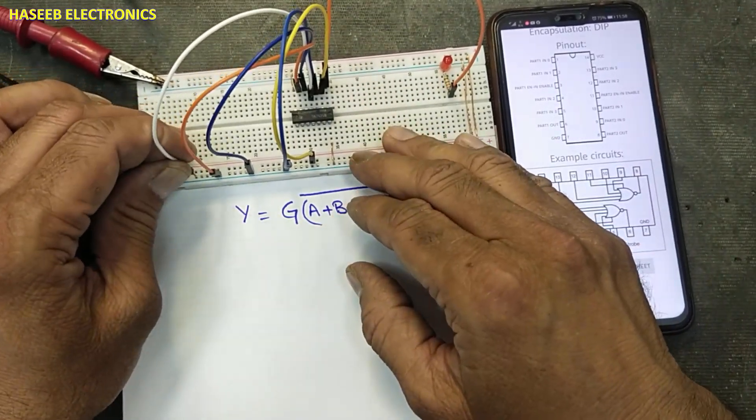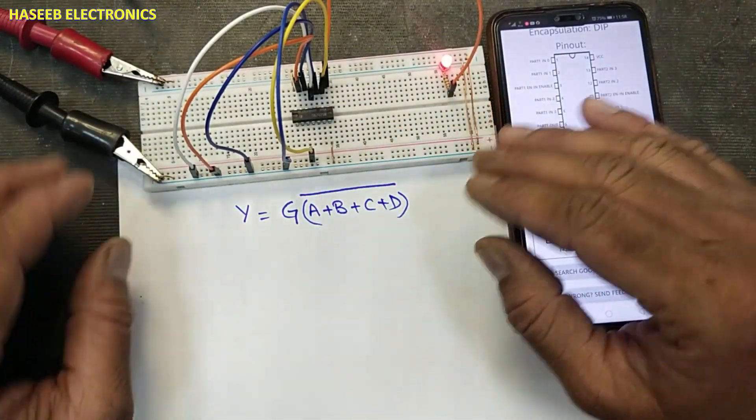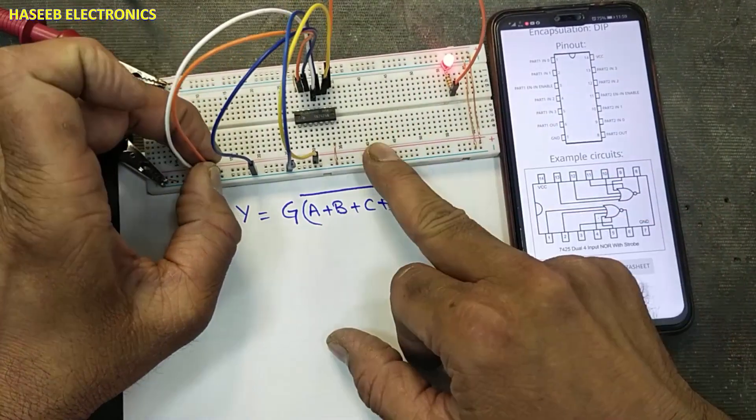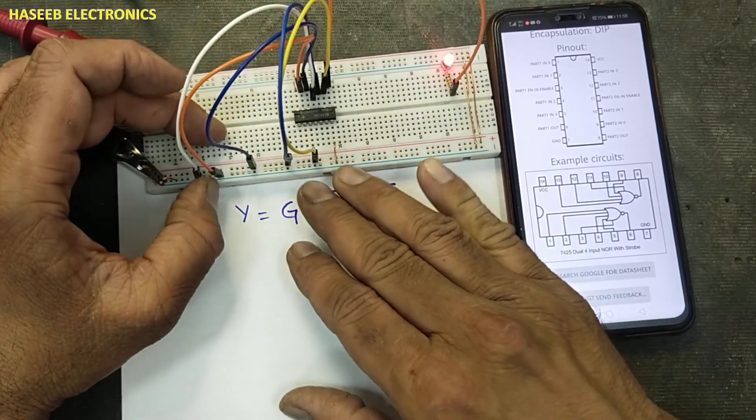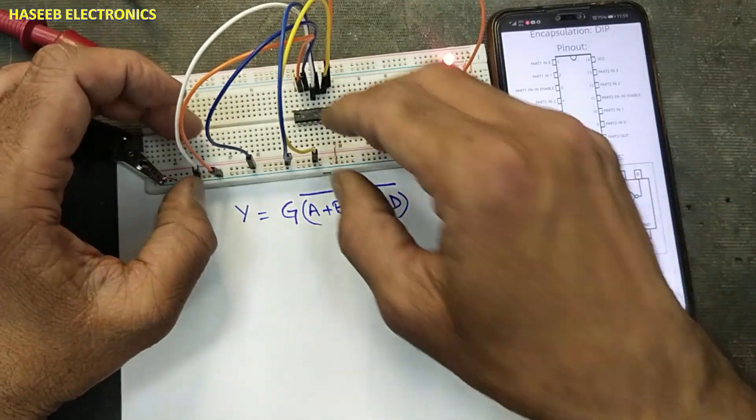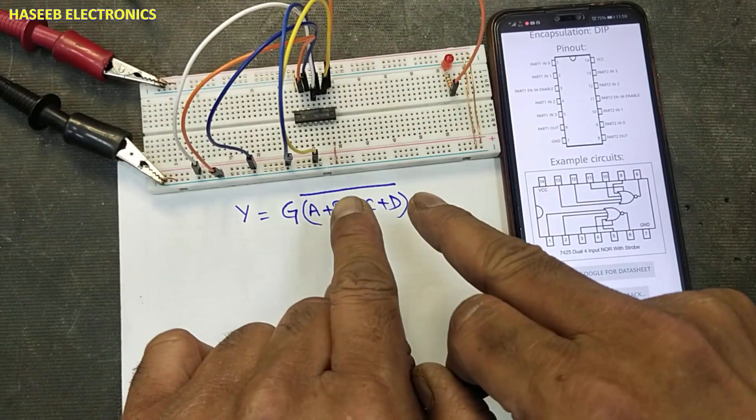Now, if strobe is pulled down, IC will in disabled state. The output will be high. This is function of 7425 IC. Strobe must be high to perform NOR function.